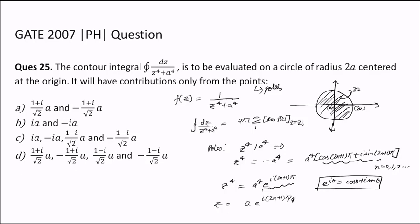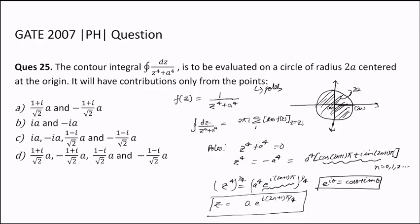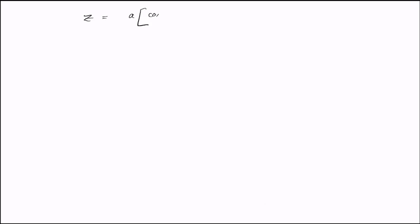Taking 1/4 on both sides, we get the poles. These can be written as a times (cos θ + i·sin θ) where θ = (2n+1)π/4 — that is, a times cos((2n+1)π/4) + i·sin((2n+1)π/4), where n = 0, 1, 2, ...